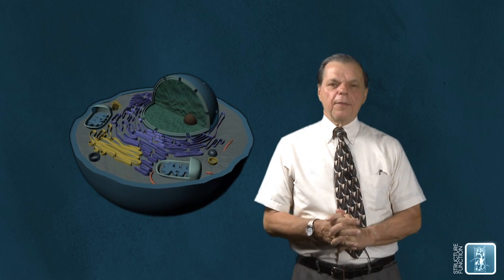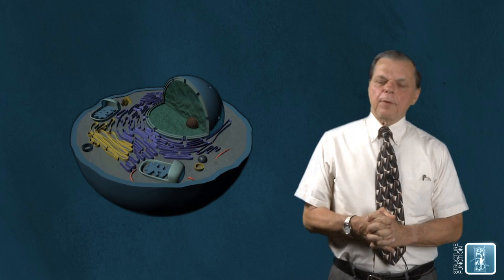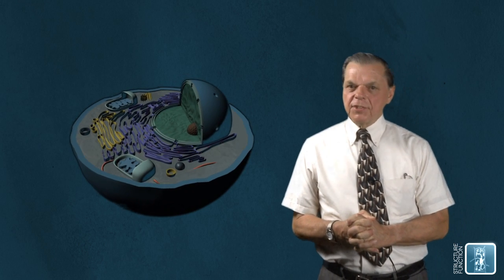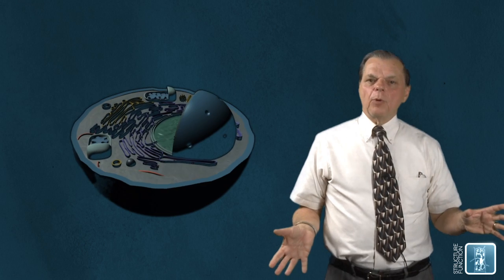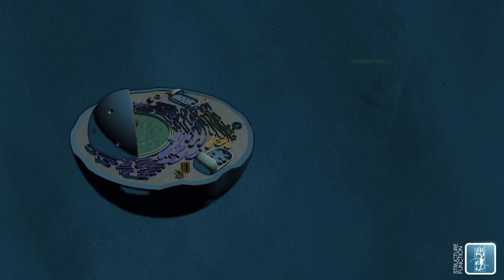We also see that there are a lot of rod-like structures in various places in the cell. And those also form a pattern which helps shape the cell, helps to define its strength, and also it provides little pathways for things to move from place to place.